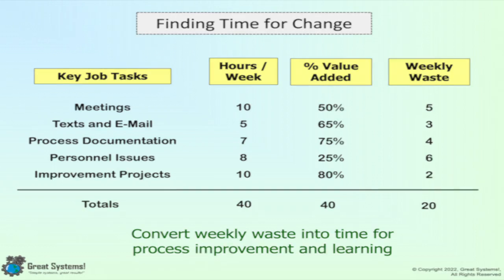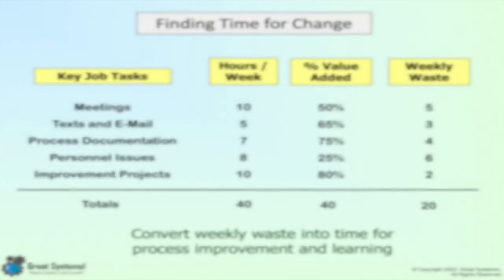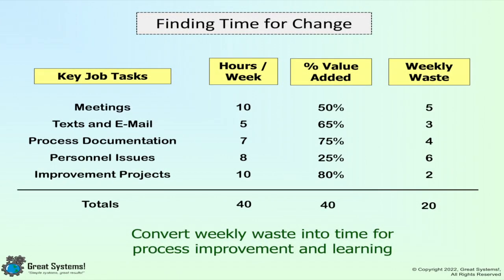The analysis you do in this area does not have to be stopwatch driven. Rough estimates are usually enough to shock you. Begin by completing a table similar to the one shown. Simply estimate how many hours a week you spend in meetings, processing email and texts, filling out paperwork or process documentation, working with others to resolve personnel issues, and developing projects. Those are the general time buckets for a manager or supervisor.